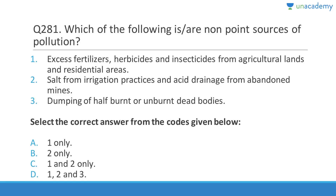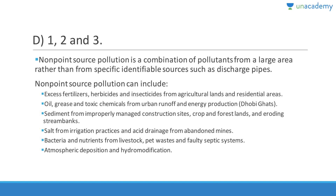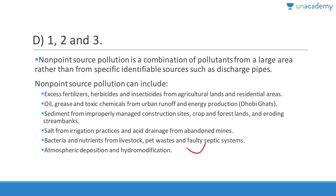Question 281: Which of the following are non-point sources of pollution? Excess fertilizers, herbicides, insecticides from agricultural land and residential areas; salt from irrigation practices; acid drainage from mines; dumping of half-burnt or unburnt dead bodies — all of these are correct. Answer is D (1,2,3).